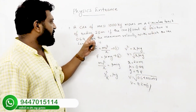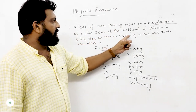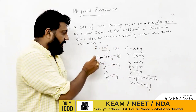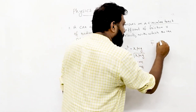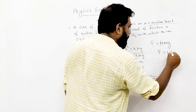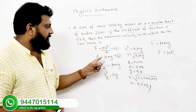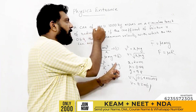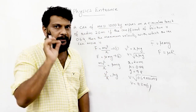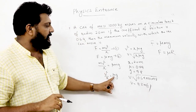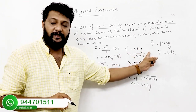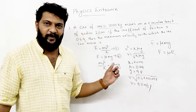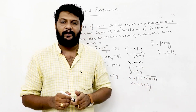A car moves on a road of radius 20 m. If the coefficient of friction is 0.64, the maximum velocity the car can move is found using F = mv²/R, where frictional force equals μmg. So v = √(μgR) = √(0.64 × 9.8 × 20) = √125.44 ≈ 11.2 m per second.